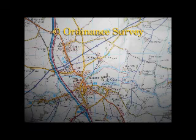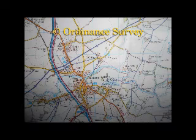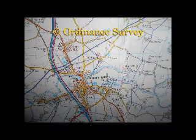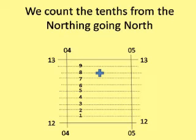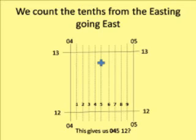Nominating the four-figure grid reference for a square is fairly easy. To get it down to 100 metres, you need a six-figure reference. There are a number of ways of doing it. In order to get the increased accuracy, we divide each square into tenths going east and then each square into tenths going north. We add the tenths to our existing grid reference.